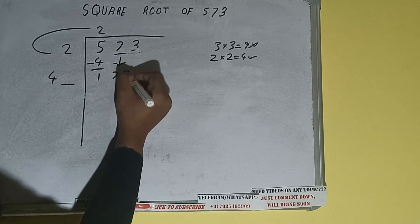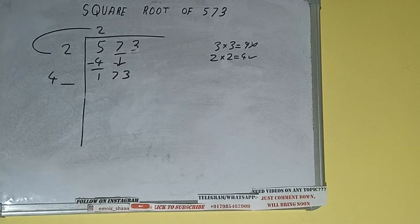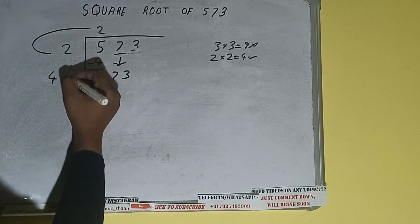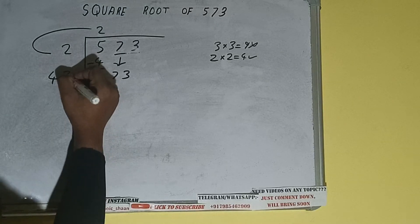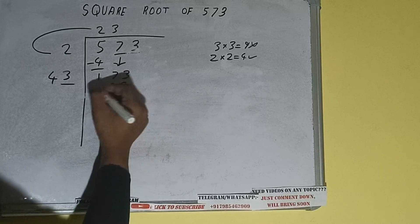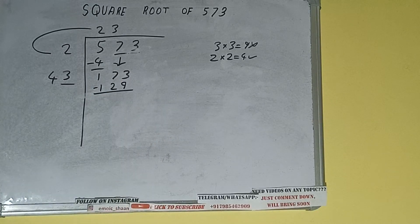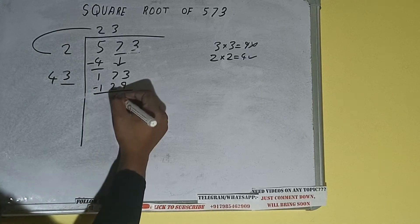Bring the next pair down and it will be 173. Now whatever number we write here, we have to write here also. So if we write 4 here and 4 here, we'll be getting 176 which is greater than 173, so we cannot use it. Let's try 3. So 3 here and 3 here, it will be 129 subtract. And we'll be left with 44.